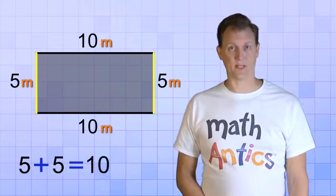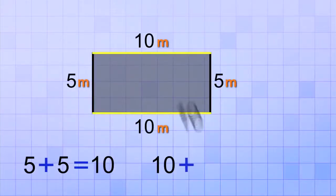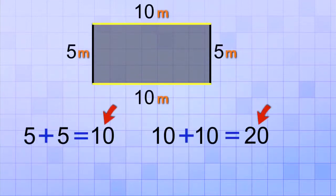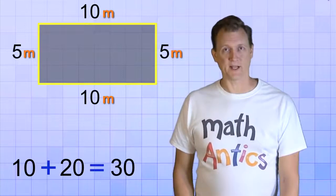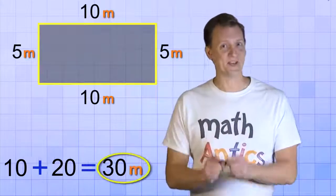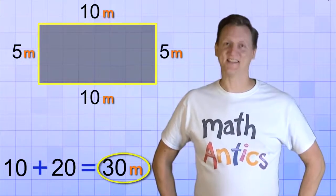5 plus 5 equals 10. Next, I'll add up the two longer sides. 10 plus 10 equals 20. And now, if I add up those two answers, I'll get the total for all four sides. 10 plus 20 equals 30. So, the perimeter of this rectangle is 30. Meters! You thought I was going to forget my units, didn't you? Not this time.